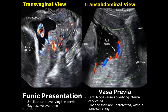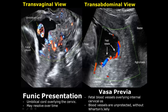A vasa previa occurs when there are fetal vessels overlying the internal cervical os. These blood vessels are also not protected by Wharton's jelly. It is different from a funic presentation, in which the umbilical cord overlies the cervix — here we can see the umbilical cord moving and floating in the amniotic fluid, and we can also see the Wharton's jelly.